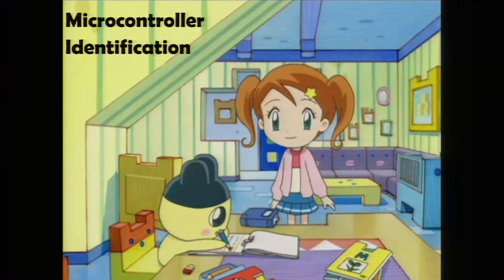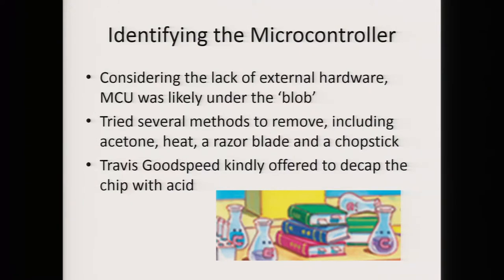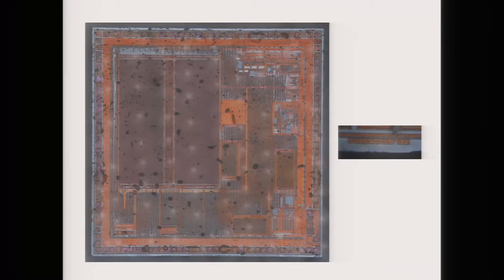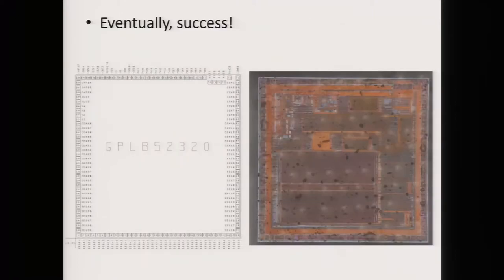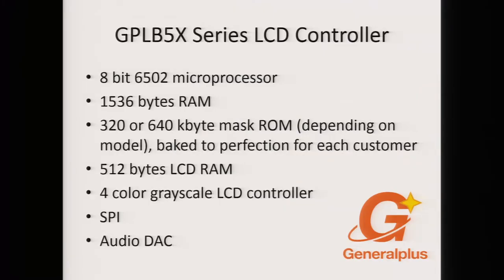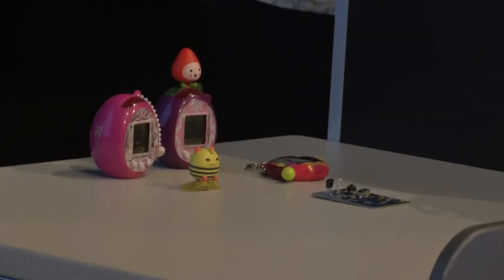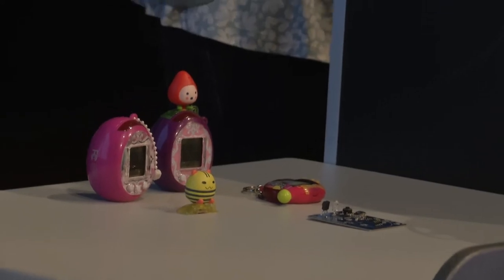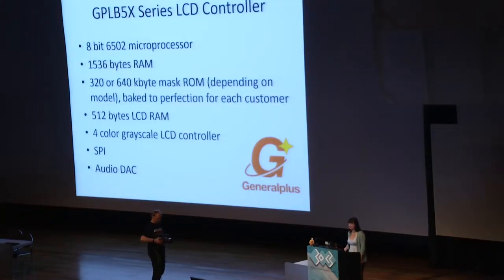The first thing I needed to do was identify the microcontroller. I tried many crazy, dangerous, and ineffective ways of removing the epoxy before Travis Goodspeed was kind enough to decap it with acid. After lots of looking I managed to identify it — it's a General Plus LCD controller. The two most interesting things about it: it runs 6502 like a Commodore, and it has maskrom. The major con to maskrom is that I can never reprogram it — it's manufactured directly into the transistors — so it pretty much rules out permanently modifying the Tamagotchi in any way.